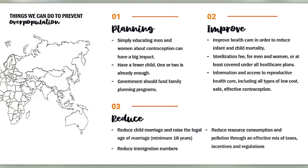Here are the things we can do to prevent overpopulation. Number one: planning. Simply educating men and women about contraception can have a big impact. Also, have fewer children — one or two is already enough. And government should fund family planning programs.